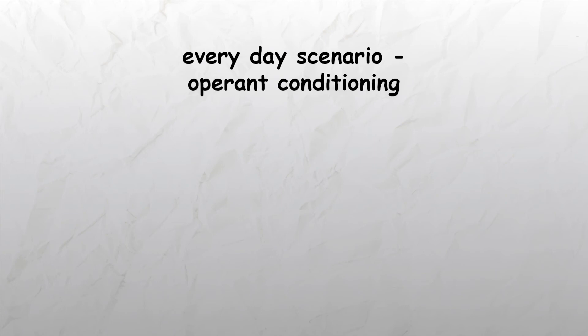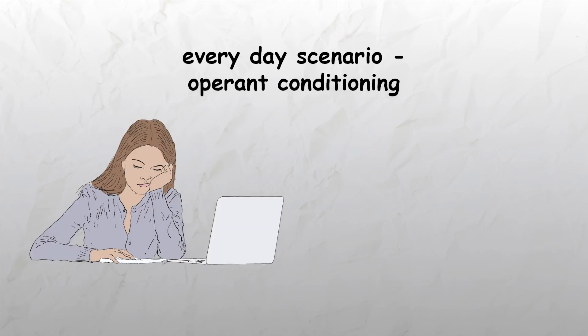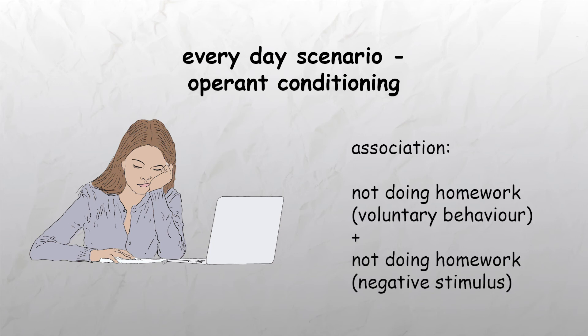So how can we apply operant conditioning to an everyday scenario? In a school scenario, a teacher might punish a pupil for not doing their homework by keeping them in class during break time. As a result, at least in theory, the student forms an association between not doing their homework — the voluntary behavior — and having to stay in at break — the negative stimulus — which causes negative reinforcement, intended to dissuade the pupil from that behavior in the future.